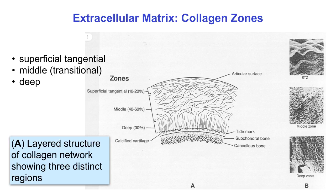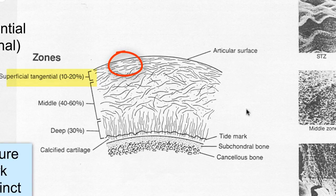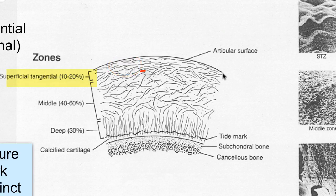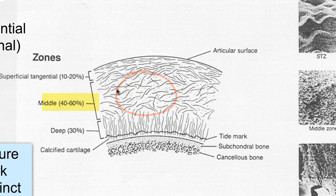Collagen architecture and cell morphology vary through the thickness of cartilage, which is divided into three distinct morphological zones. In the superficial or tangential zone, occupying the outer 10 to 20 percent of the cartilage thickness, collagen fibers are crimped and aligned tangentially to the surface. In the middle or transitional zone, occupying 40 to 60 percent of the thickness, collagen fibers are more randomly and isotropically aligned. Finally, in the inner 30 percent nearest the bone, known as the deep or radial zone, collagen fibers are primarily radial, i.e., perpendicular to the bone surface.